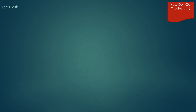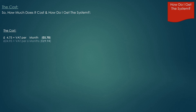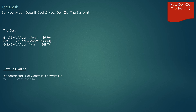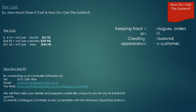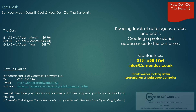So, the big question — how much does it cost and how do I get the system? The cost is a leased system and you can either pay £4.75 per month, £24.95 for six months, or £41.45 for a year. How do you get it? By contacting us at Controller Software Ltd on 0151 558 1964, or via email, or through our website. We will then prepare a data file that's unique to you to be installed on your PC. Thank you very much for taking time to look at this short presentation of Catalogue Controller, and we hope to hear from you soon.